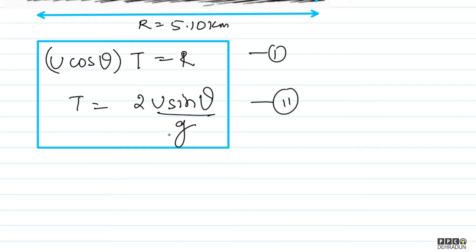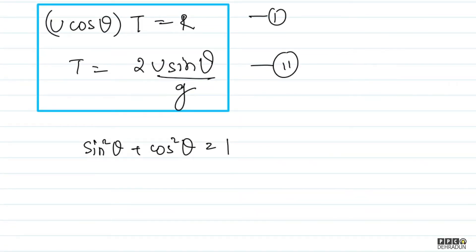So, if I use sin square theta plus cos square theta equal to 1, then you can see I will write cos theta as r upon ut and similarly sin theta will be gt upon 2u. So let me put in the values: sin theta squared is gt upon 2u squared plus cos theta squared is r upon ut squared, and that equals 1.